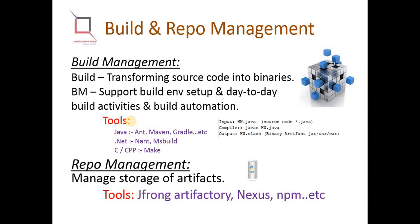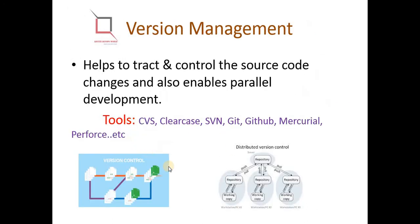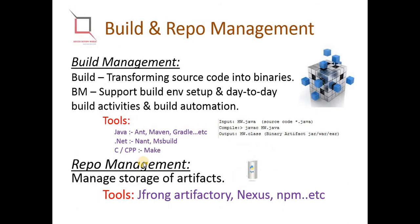Build and repository management — build is nothing but transforming the source code into binaries. We manage the source code (e.g., .java files), then perform compilation and packaging, which can be automated using build management. The input is your Java source code; output is a binary file like a .class file or DLL, and after packaging we get artifacts like JAR or WAR files. To automate this, tools for Java include Ant, Maven, and Gradle; for .NET, NAnt and MSBuild; for C/C++, Make.